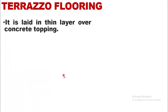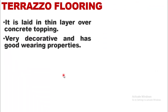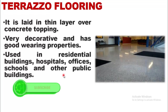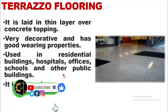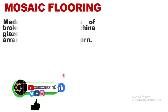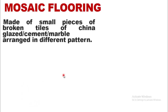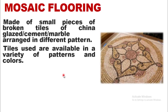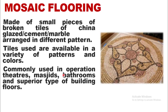Terrazzo flooring is laid in a thin layer over concrete topping, is very decorative, and has good wearing properties. It is used in residential buildings, hospitals, offices, schools, and other public buildings, though it is expensive. Mosaic flooring is made of small pieces of broken tiles of china, glazed cement, or marble arranged in different patterns, and is commonly used in operation theaters, mosques, bathrooms, and superior types of buildings.